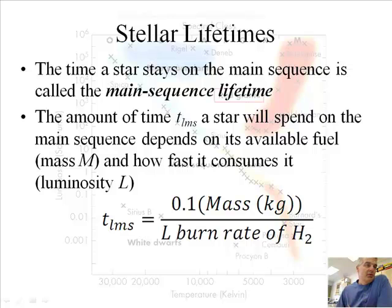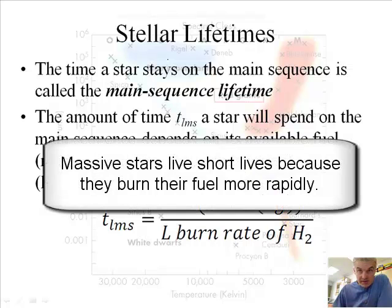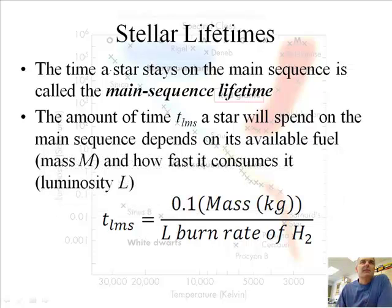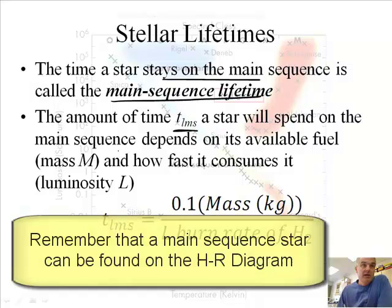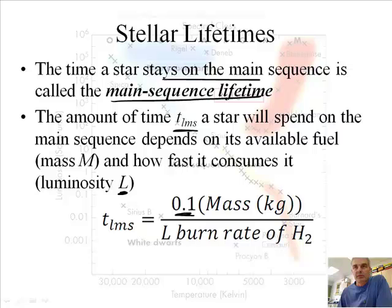How long does a star live? The answer is more complex than you probably think. It actually depends on the mass of the star. Essentially, the bigger the star, the more massive the star, the shorter the life. The time the star stays on the main sequence is called the main-sequence lifetime. The amount of time, t_lms, a star will spend on the main sequence depends on its available fuel. The fuel is the mass of the star, and how fast it consumes, which is its luminosity, how bright it is. Basically, it's going to be 0.1 of the mass divided by its luminosity.